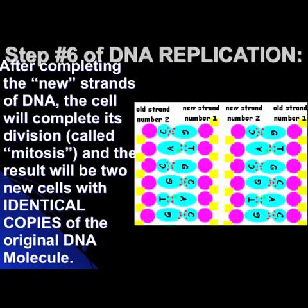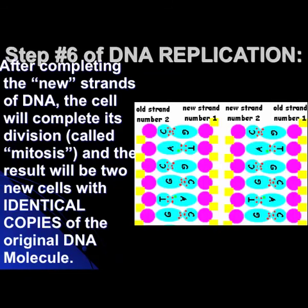After completing the new strand, the cells will completely divide through mitosis, and the result will be two identical cells with two identical copies of DNA — millions and millions of base pairs each. On the far left we have the old strand and the new strand, and then new strand number two and old strand number one. It's like the ladder cut down the middle, separated, and glued back — two half ladders becoming two complete identical ladders. The C's, G's, A's, and T's are the rungs; the phosphates and sugars are the sides.